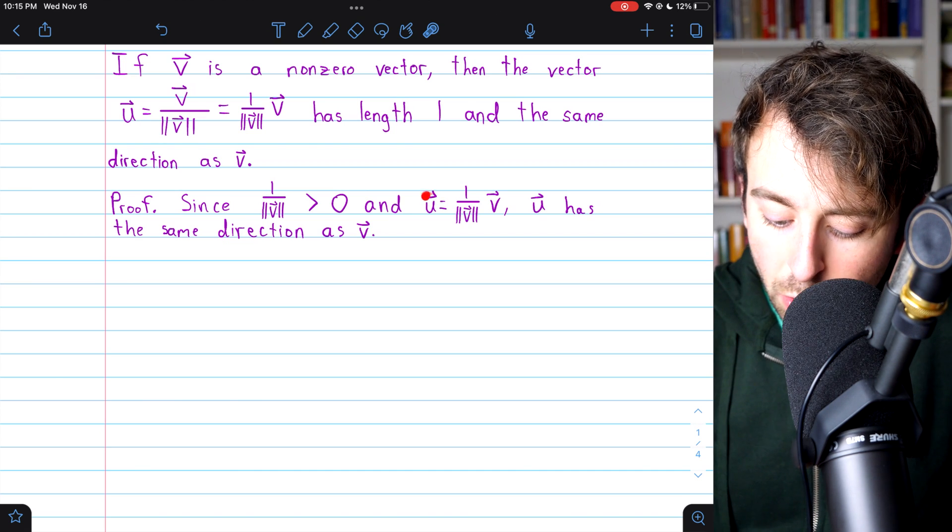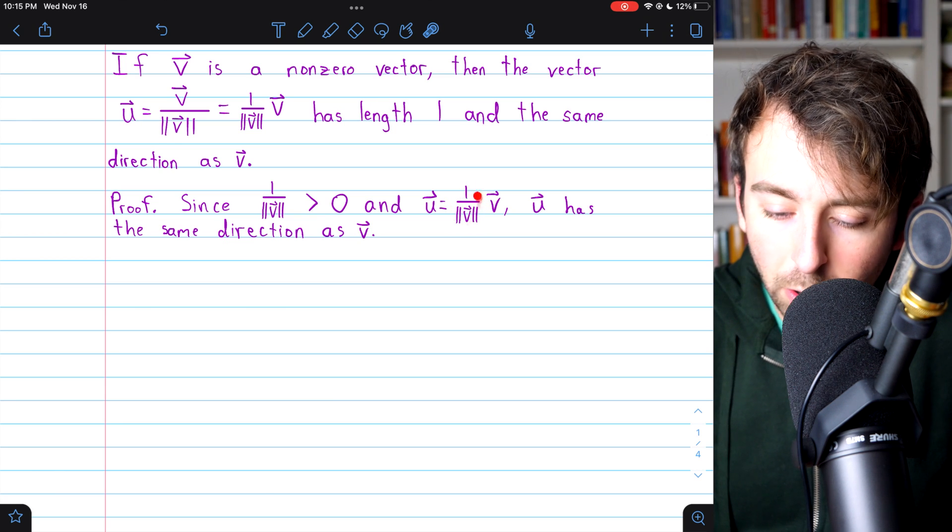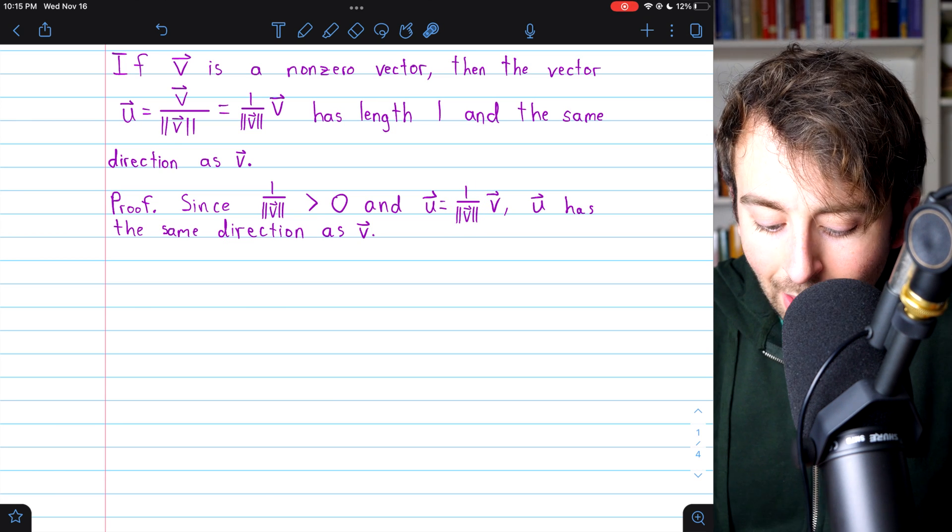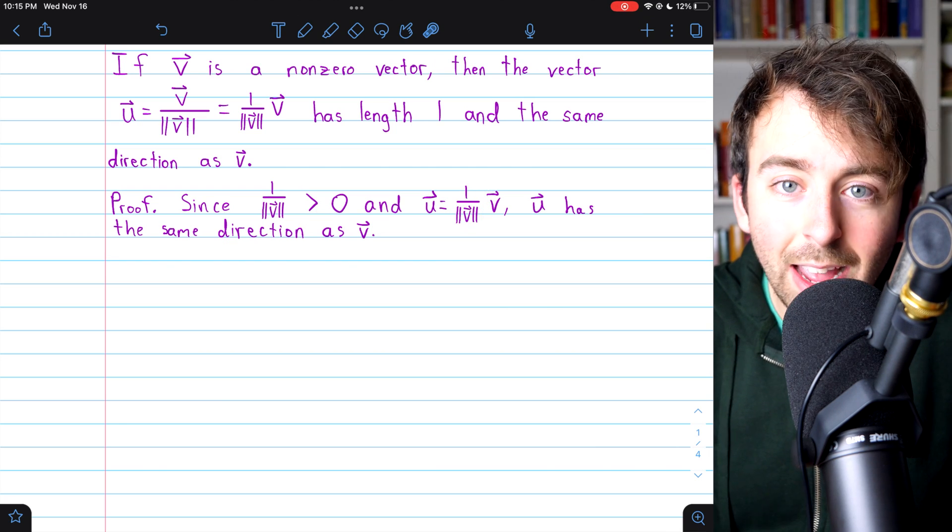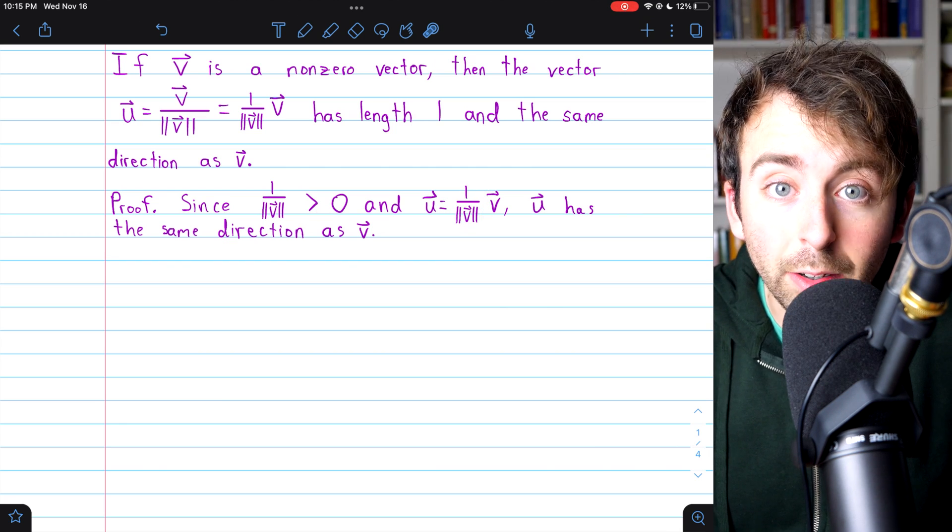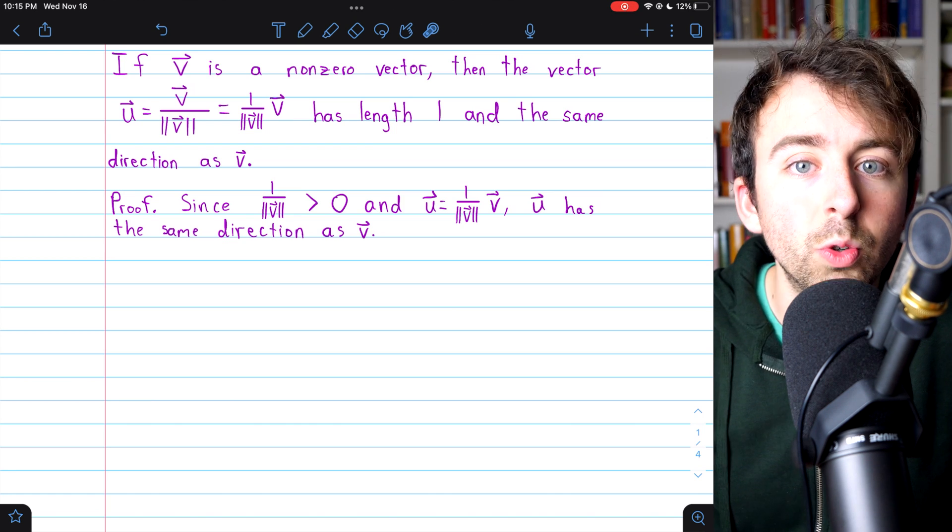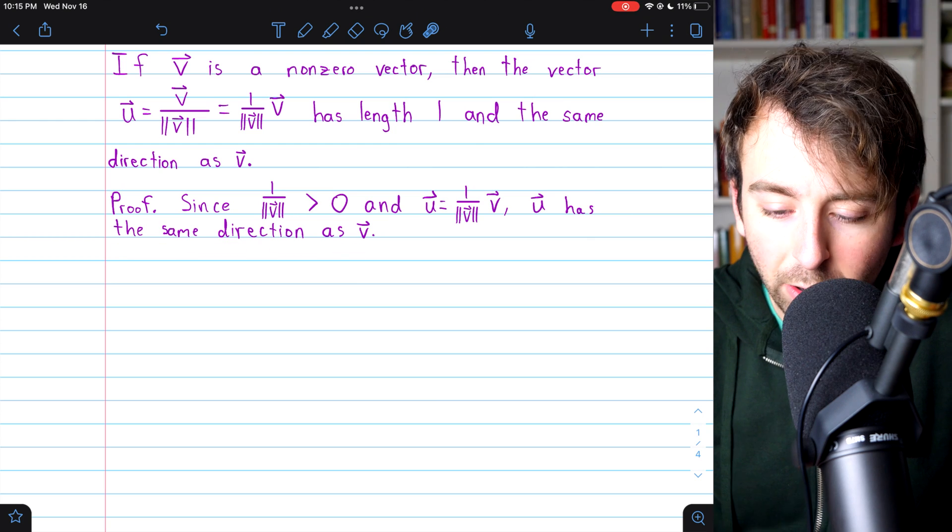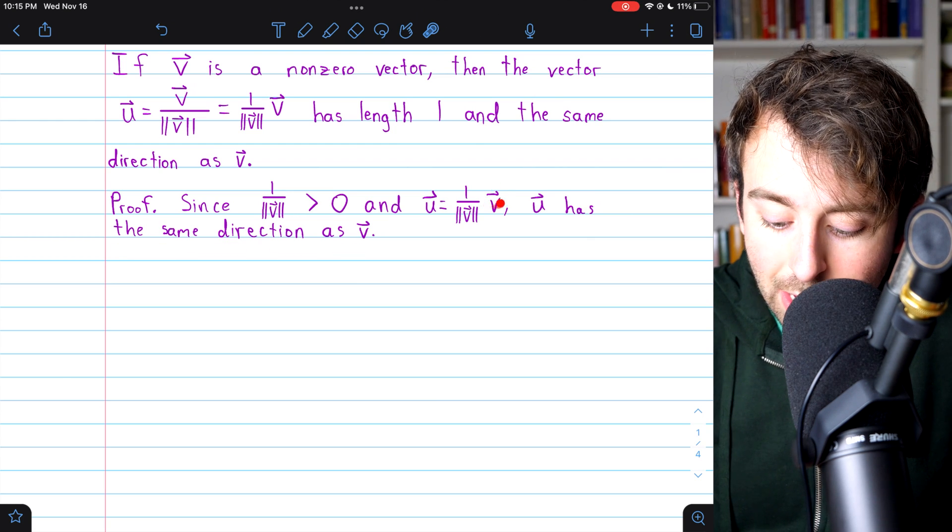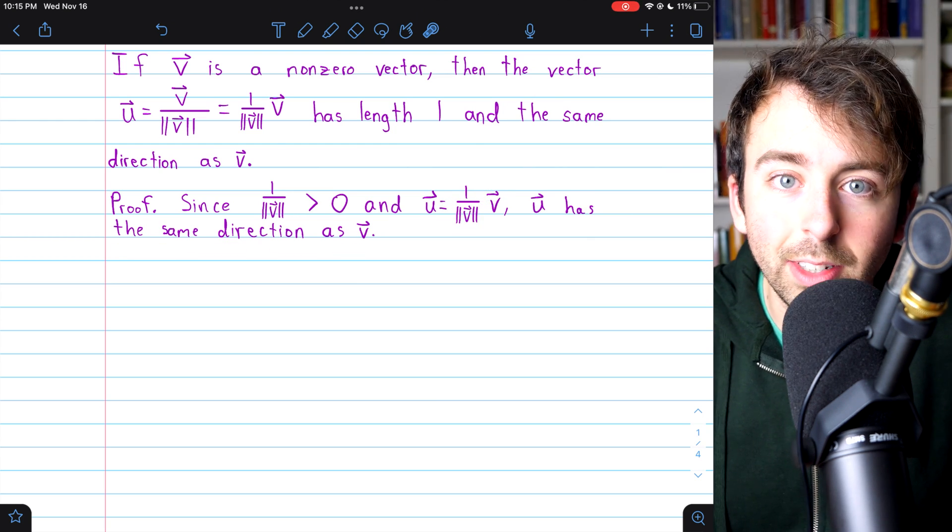But again, u is just the vector v multiplied by this scalar, 1 over v's magnitude, and that scalar is positive. So, multiplying by a positive scalar is not going to change the vector's direction. It's just going to adjust its length. So, for sure, u has the same direction as v, because it's just v multiplied by a positive scalar.